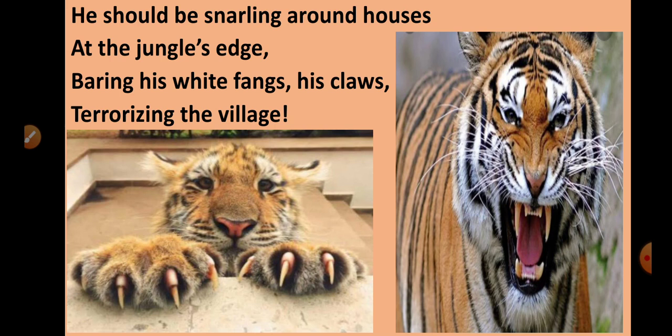He should be snarling with his white fangs — bearing means showing his white fangs and his claws. Claws are the sharp nails of the animal, and fangs are the two long teeth you can see in the picture, used to eat flesh. The poet says the tiger should be at the jungle's edge, trying to terrorize the village people by showing his fangs and claws.